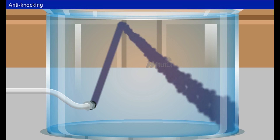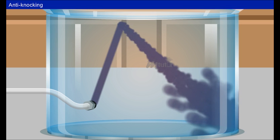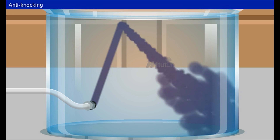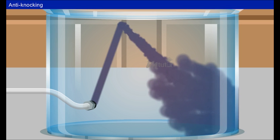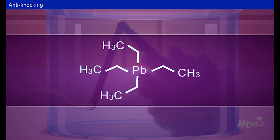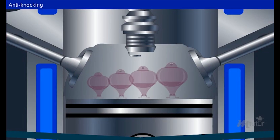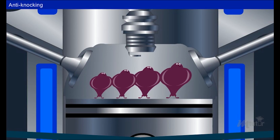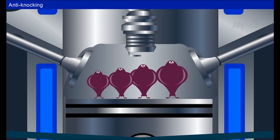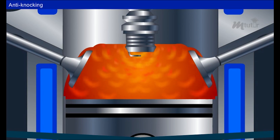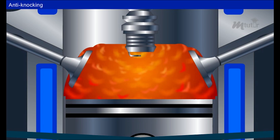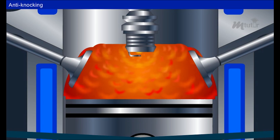The octane number of fuels can be raised by the addition of certain compounds like tetraethyl lead and diethyl telluride. Such compounds are called anti-knock compounds and the process is called doping. In gasoline made up of molecules possessing anti-knock properties, the molecules stay under control and work as a team.